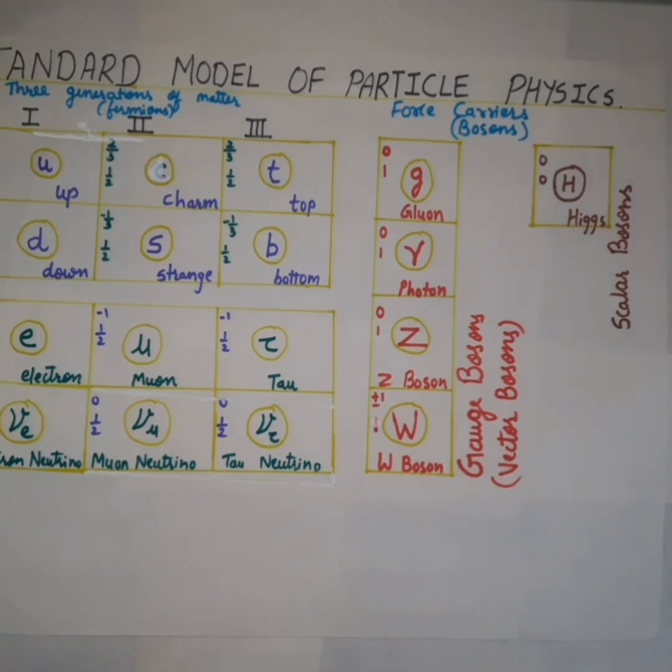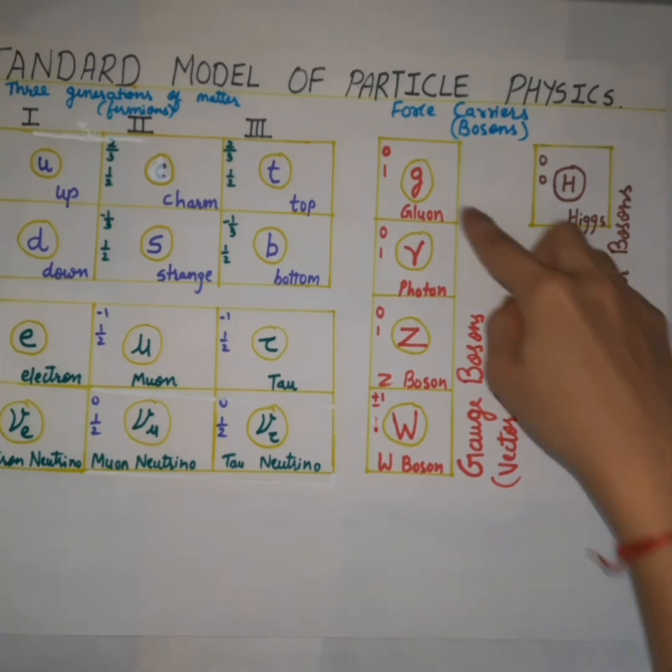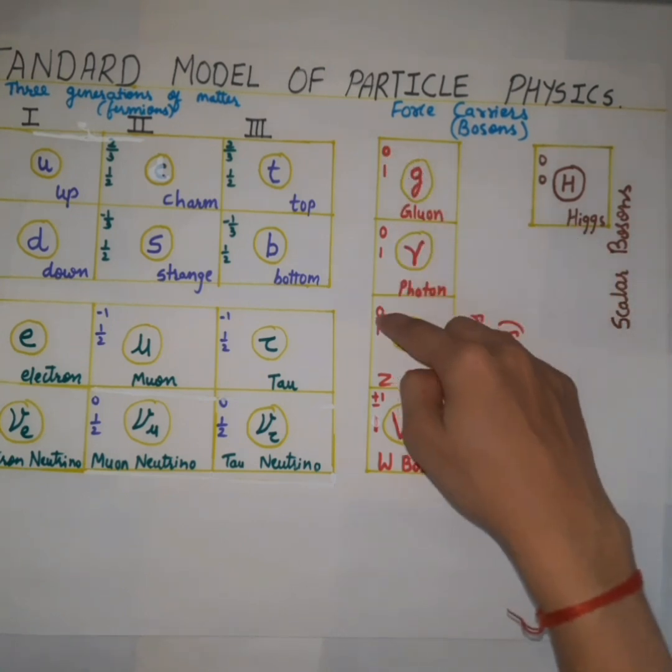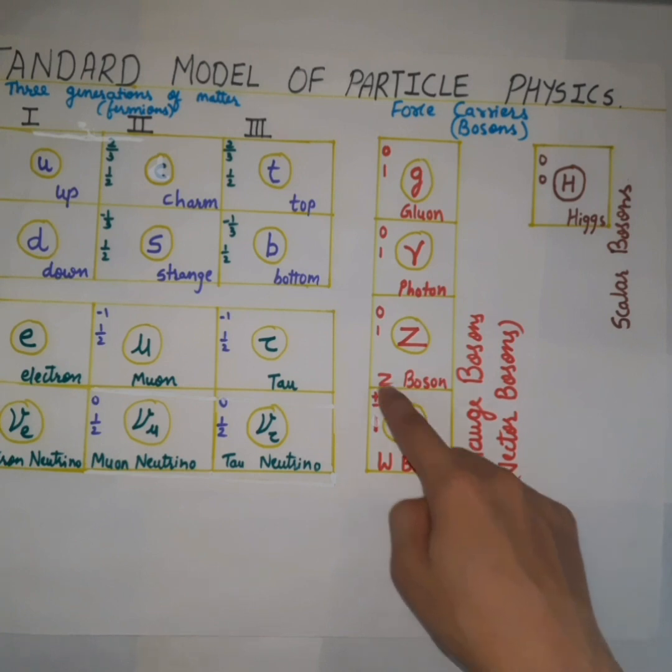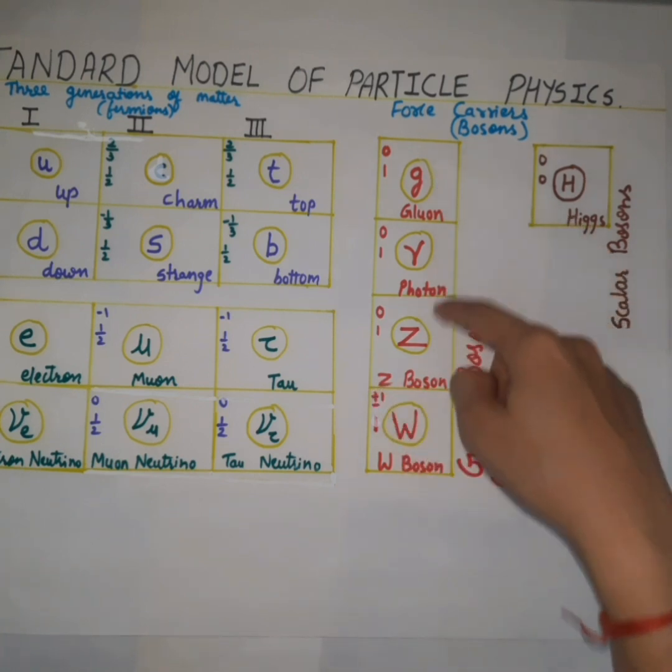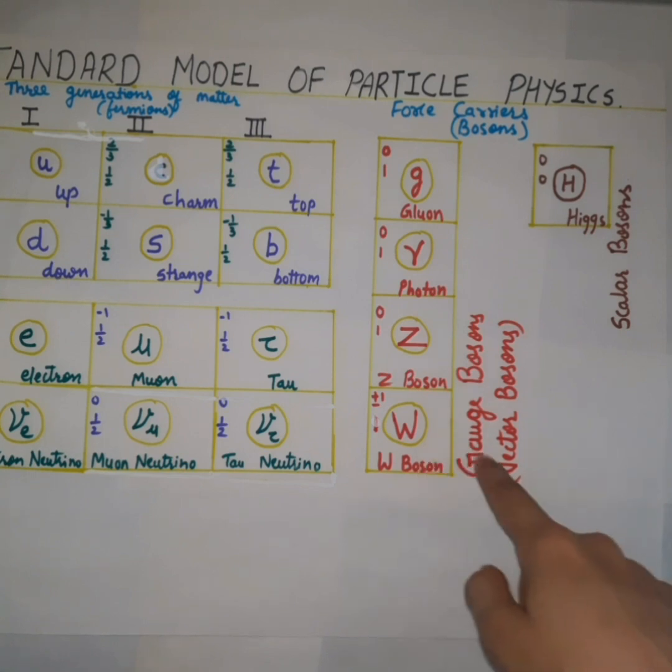Although not yet found, graviton should be the force carrying particle of gravity. The charge of gluon, photon, and Z boson is zero, whereas the charge for W boson is plus or minus one. We can see the spin for all the four is one, so we can say they are the gauge bosons or the vector bosons.